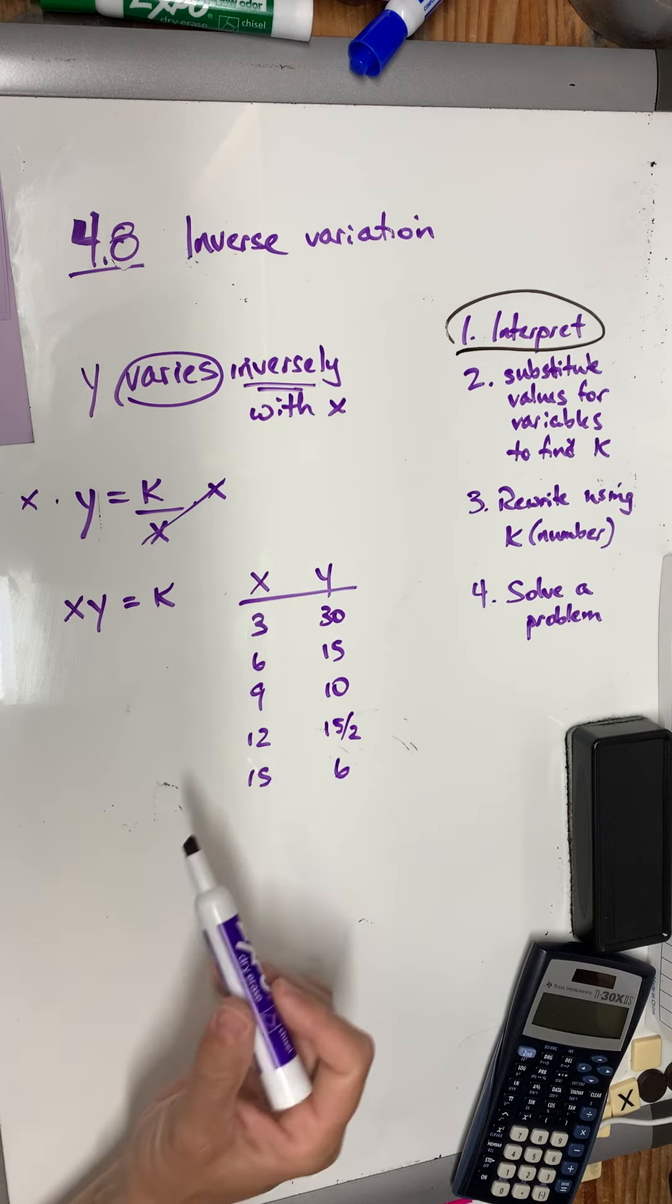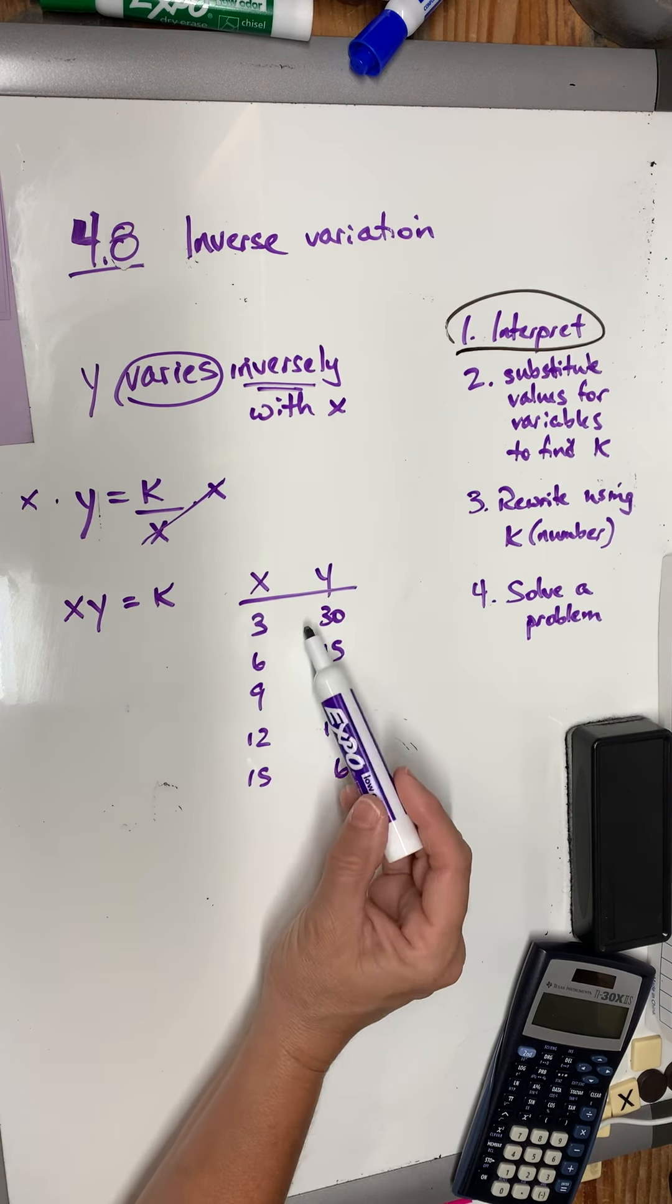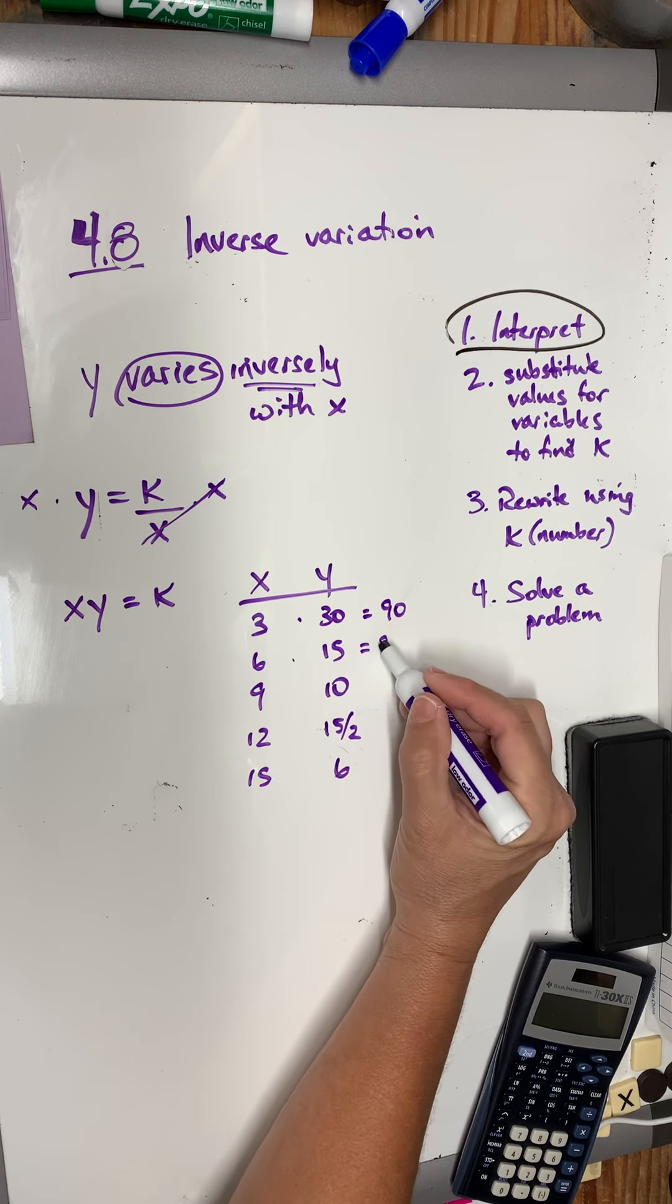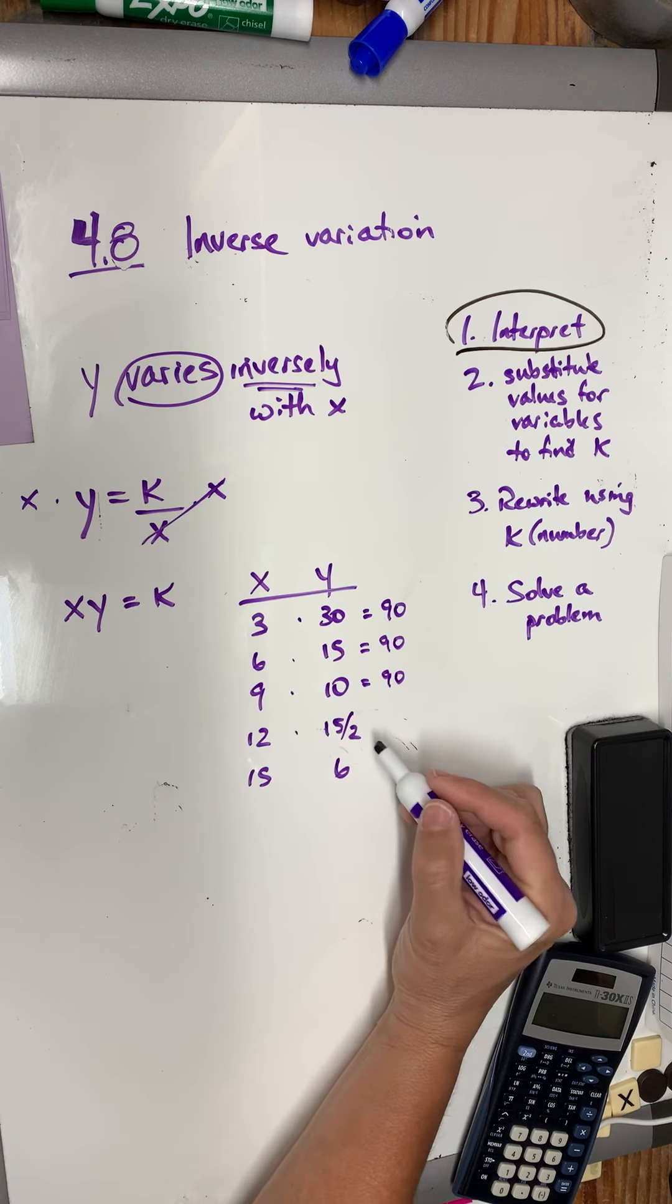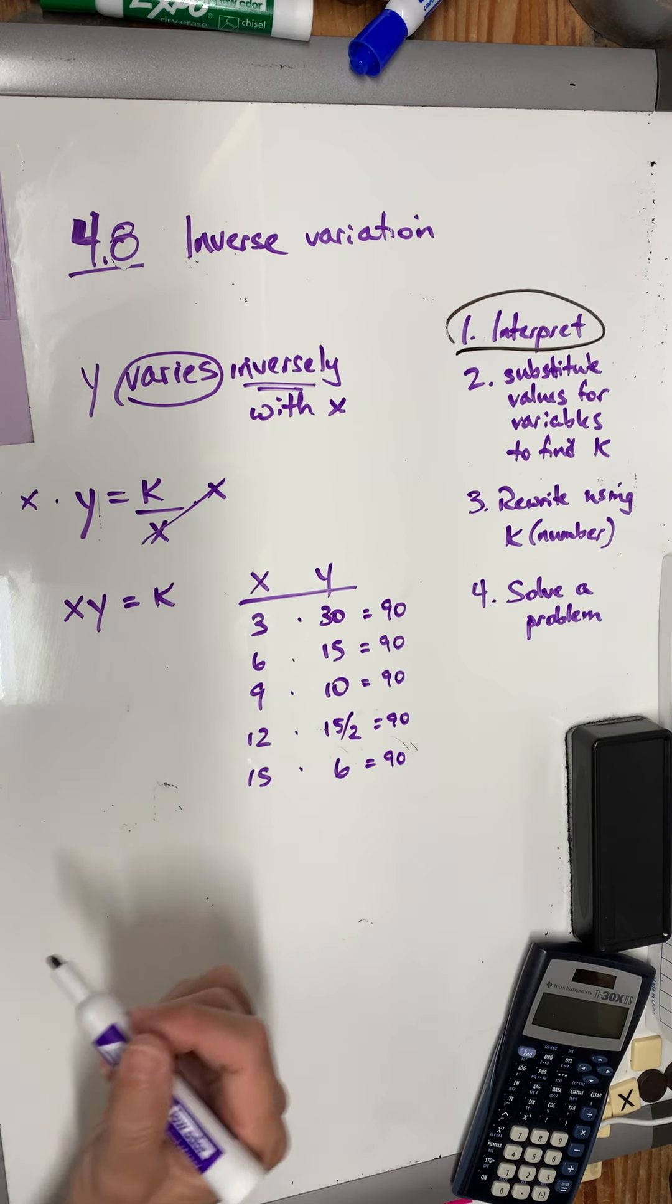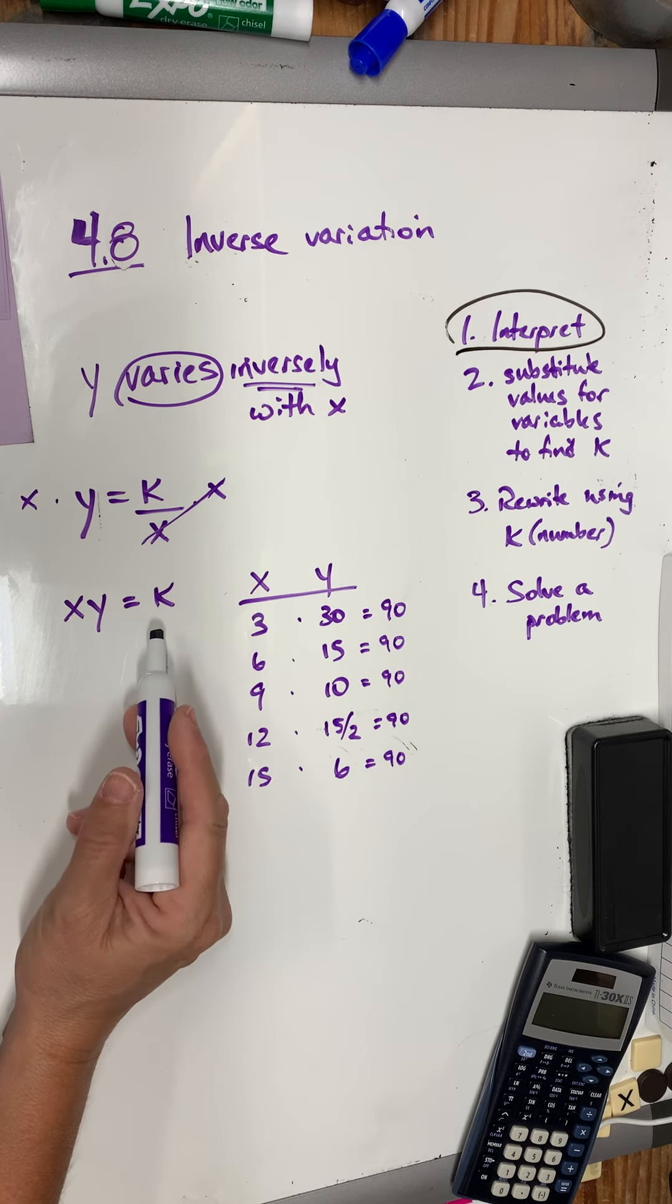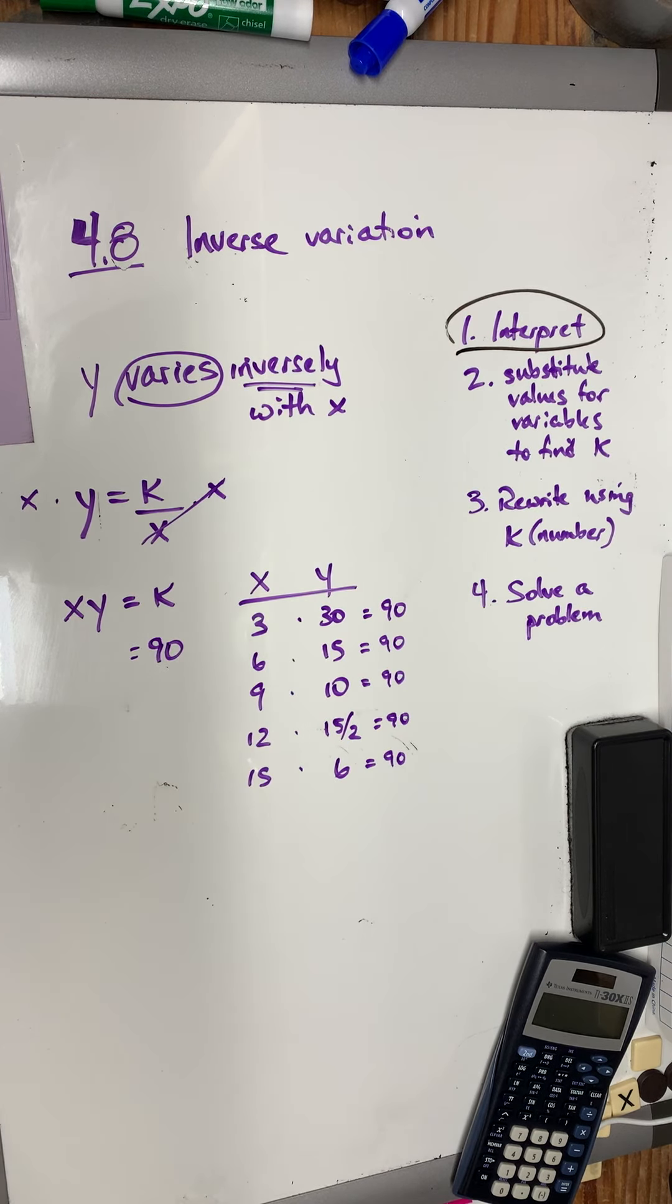So, what I want to do here to verify that this is an inverse relation is to multiply these. 3 times 30 is 90. 6 times 15 is 90. 9 times 10 is 90. 12 times 15 halves is 90. And 15 times 6 is 90. So, because they all gave the same answer, then the answer would be yes, y varies inversely with x. What is k? k is 90 in this case, because they all ended up being 90. So, that's question number 1.